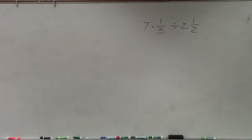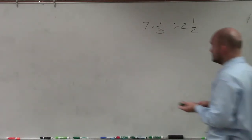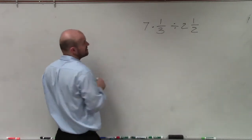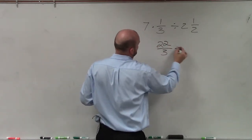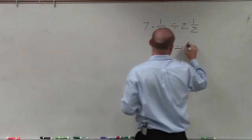What we're going to do is convert these mixed numbers. So, to convert, 3 times 7 is 21, plus 1 is 22 over 3, divided by 2 times 2 is 4, plus 1 is 5.